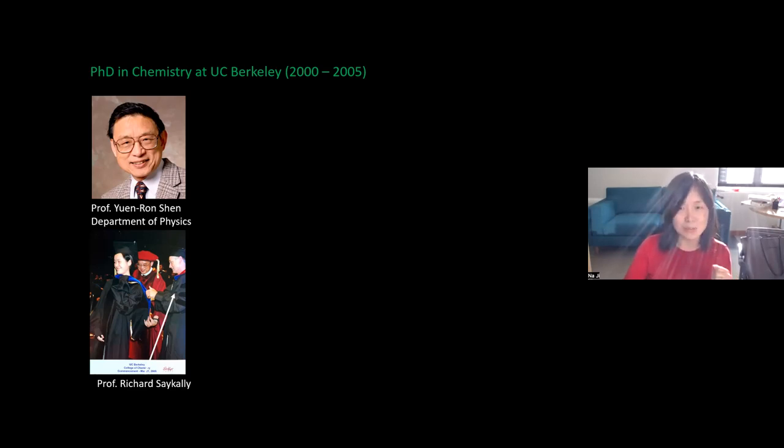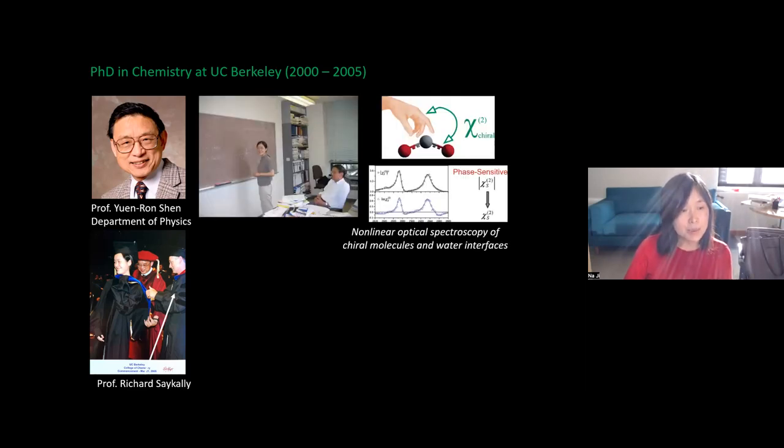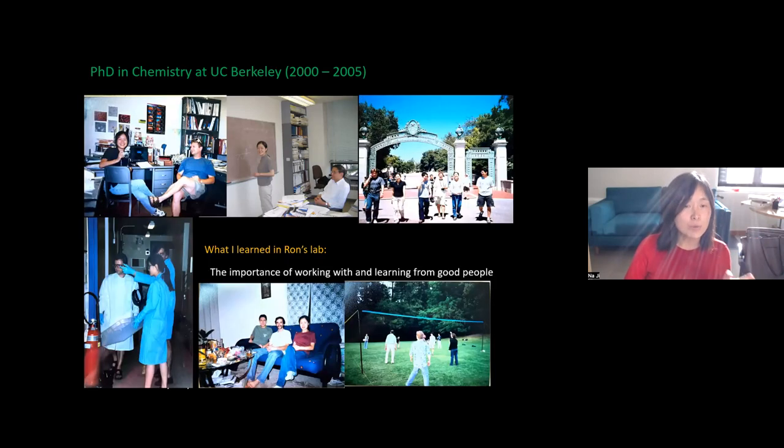For my research, I just worked with Ron using nonlinear optical spectroscopy to study things like chiral materials and chiral molecules. We also used it to study water interfaces. I learned a lot about nonlinear optics from Ron, but I also learned other things. First is the importance of working with and learning from really good people—I'm not just talking about good physicists or good scientists, I'm also talking about good people who are kind, generous, supportive, and truthful. My labmates were my friends and mentors. They supported me emotionally and scientifically.